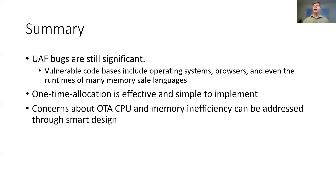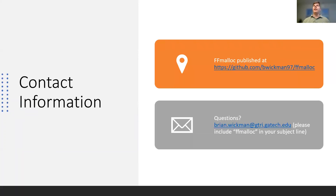With a substantial amount of code written in memory unsafe languages like C still critical to modern computing, memory safety errors like use-after-free remain a significant security threat. One-time allocation is the obvious and straightforward solution to use-after-free, but it has been dismissed as impractical for too long. While there are obvious pitfalls to be avoided, we believe that our work on FFMalloc shows that one-time allocation should be looked at again as a viable anti-use-after-free technique. The code for FFMalloc is available for download on GitHub, and if you have any questions, please email me at the address on screen. Thank you very much.